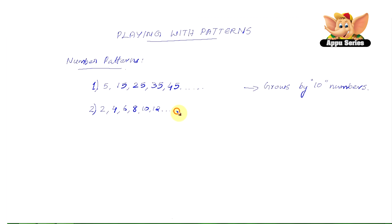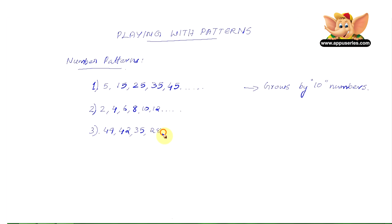In the third pattern we have 49, 42, 35, 28, 21, and 14, and so on. Each number decreases by 7.